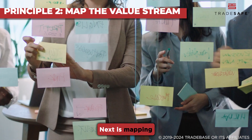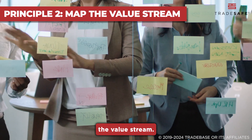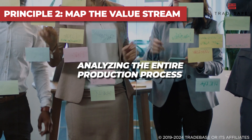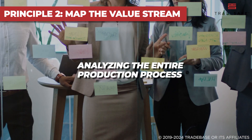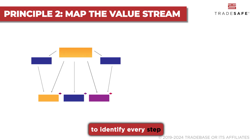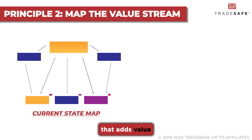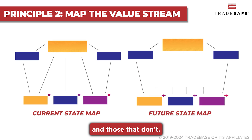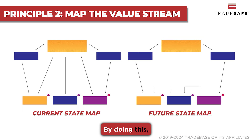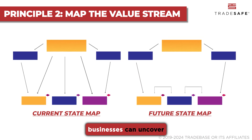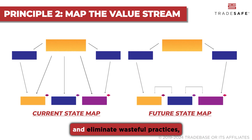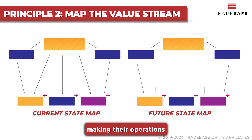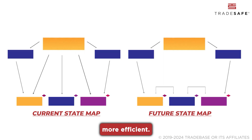Next is mapping the value stream. This principle involves analyzing the entire production process to identify every step that adds value and those that don't. By doing this, businesses can uncover and eliminate wasteful practices, making their operations more efficient.